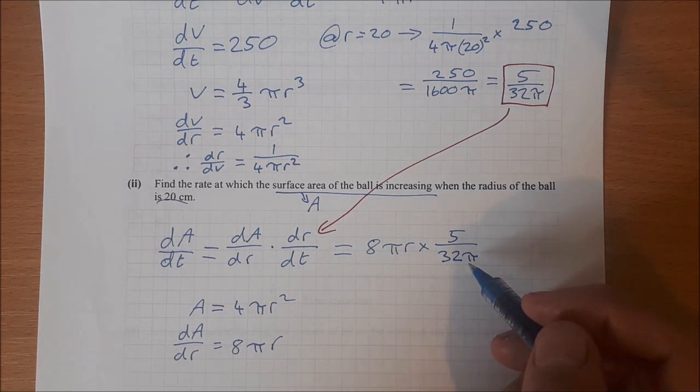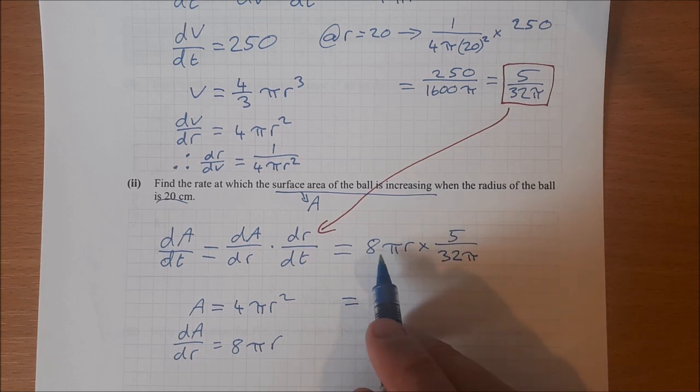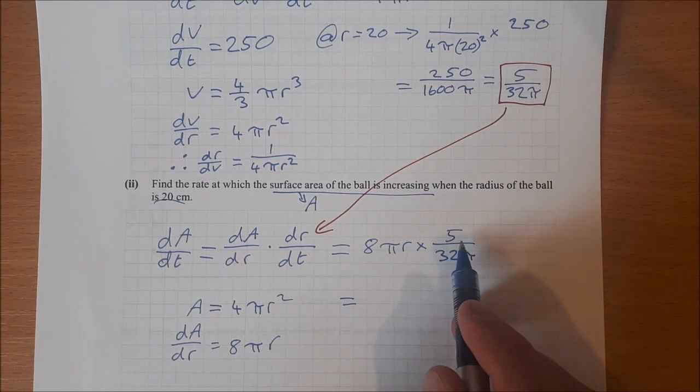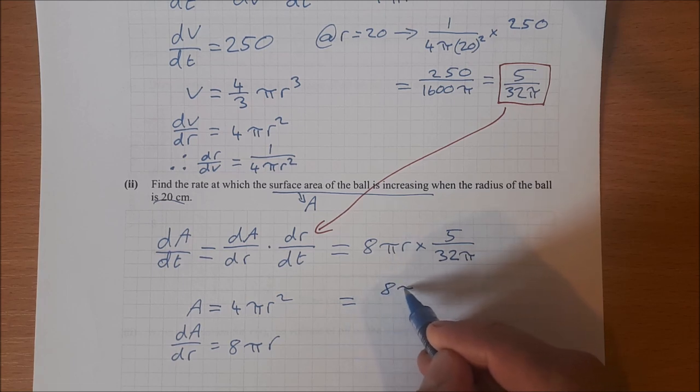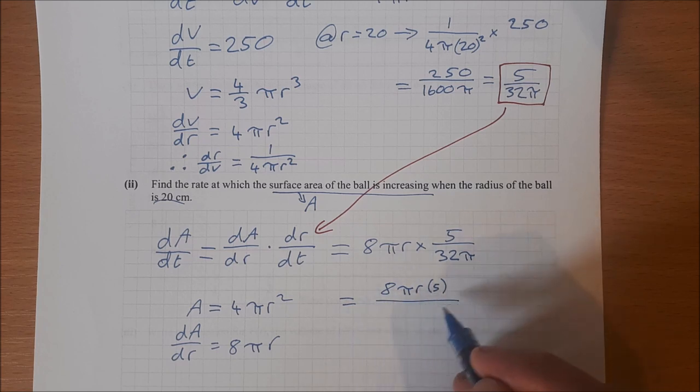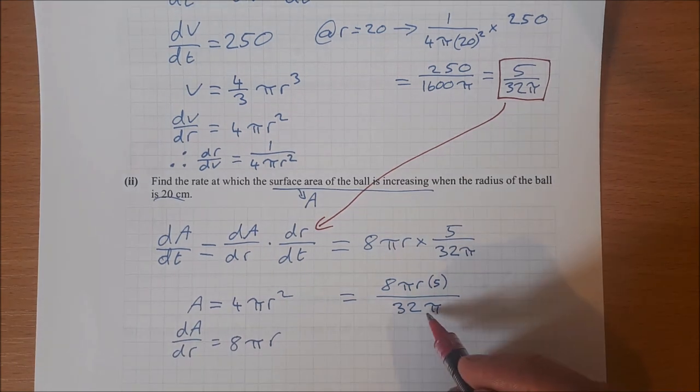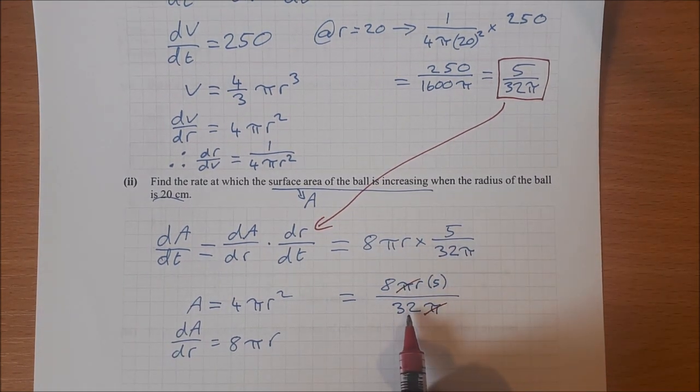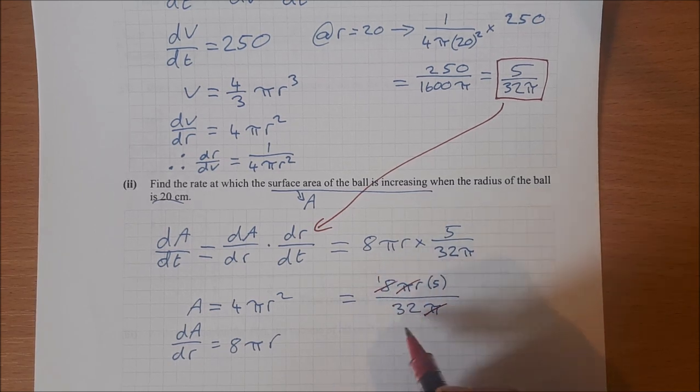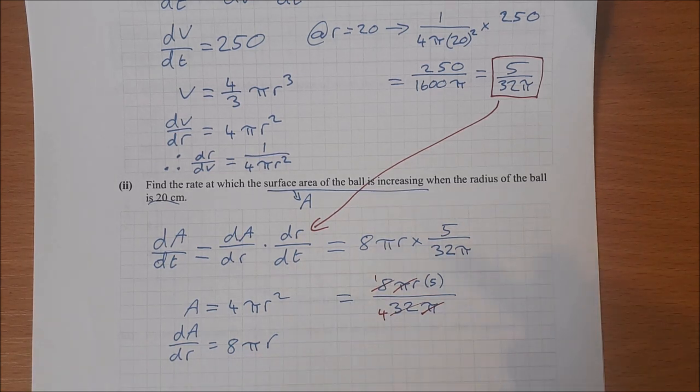And that's multiplied by dr/dt, which is 5 over 32 pi. So let's see what we get here. That would be equal to 8 pi r times 5 over 32 pi. And you'll see why I'm doing that in a second.